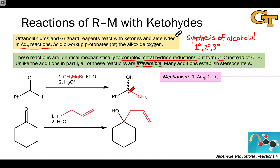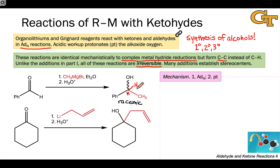The first reaction establishes a stereocenter at the former carbonyl carbon, which is typical of these reactions. We have four different groups linked to the alcohol carbon, and thus this is a tetrahedral stereocenter. Because the Grignard reagent is achiral and the starting aldehyde was achiral, we should expect a racemic mixture of products. Notice that we've added the elements of a hydrocarbon to the starting aldehyde — CH3 via the nucleophilic methyl group, and H via protonation in acidic workup.